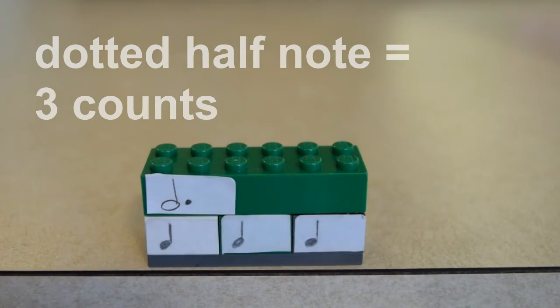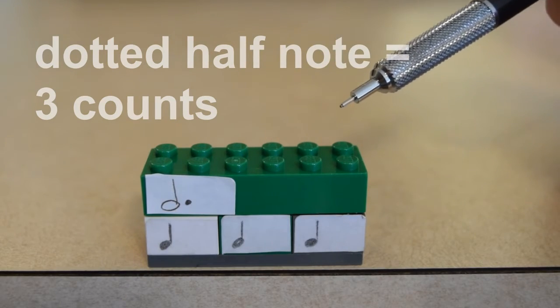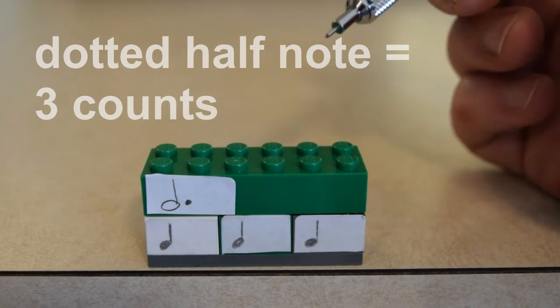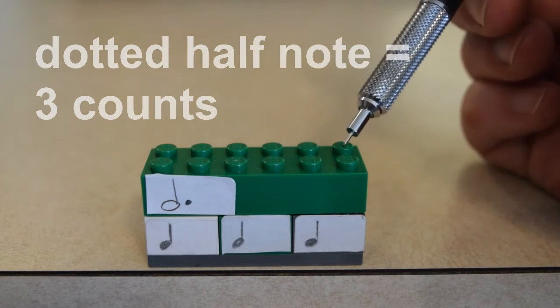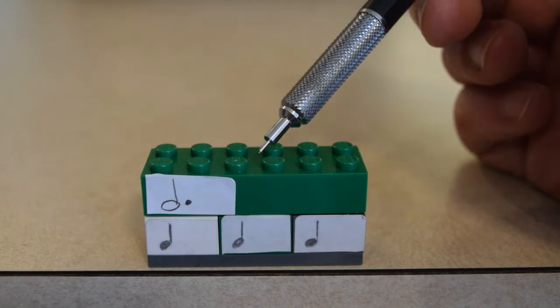And if you look through Sea Shanty, you'll see that there are a few measures that have just a single dotted half note in those measures. When you perform that, you have to make sure that you play it for three full counts, or three quarter notes long: one, two, three.